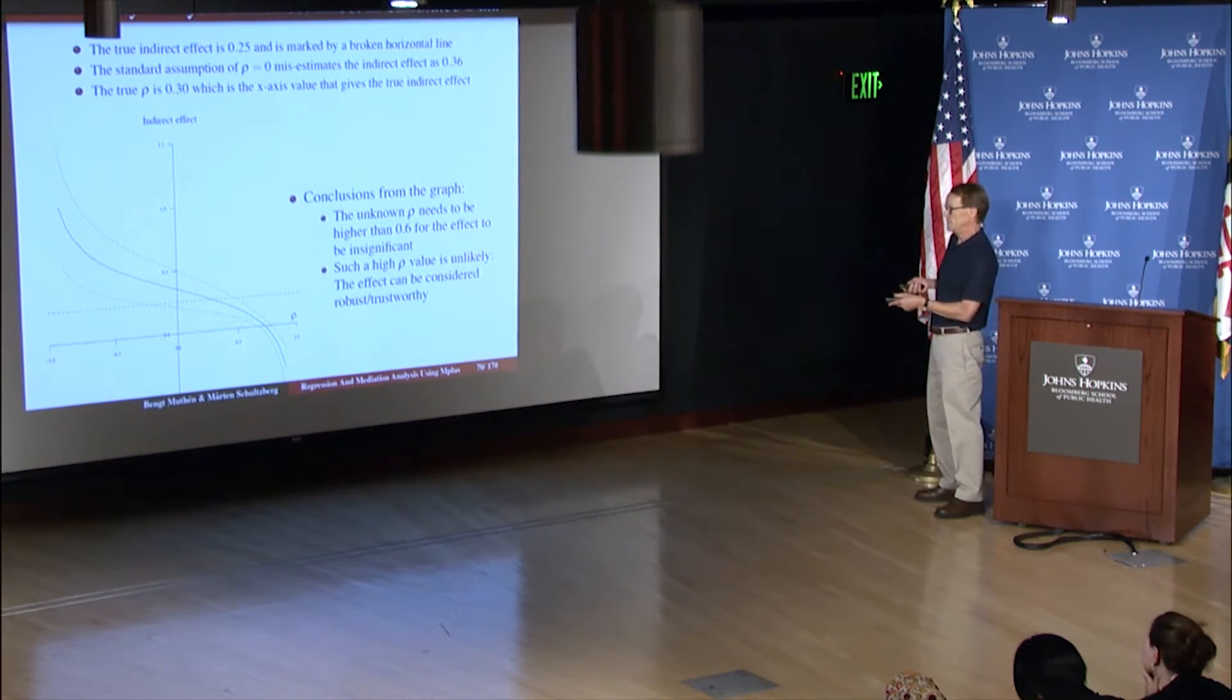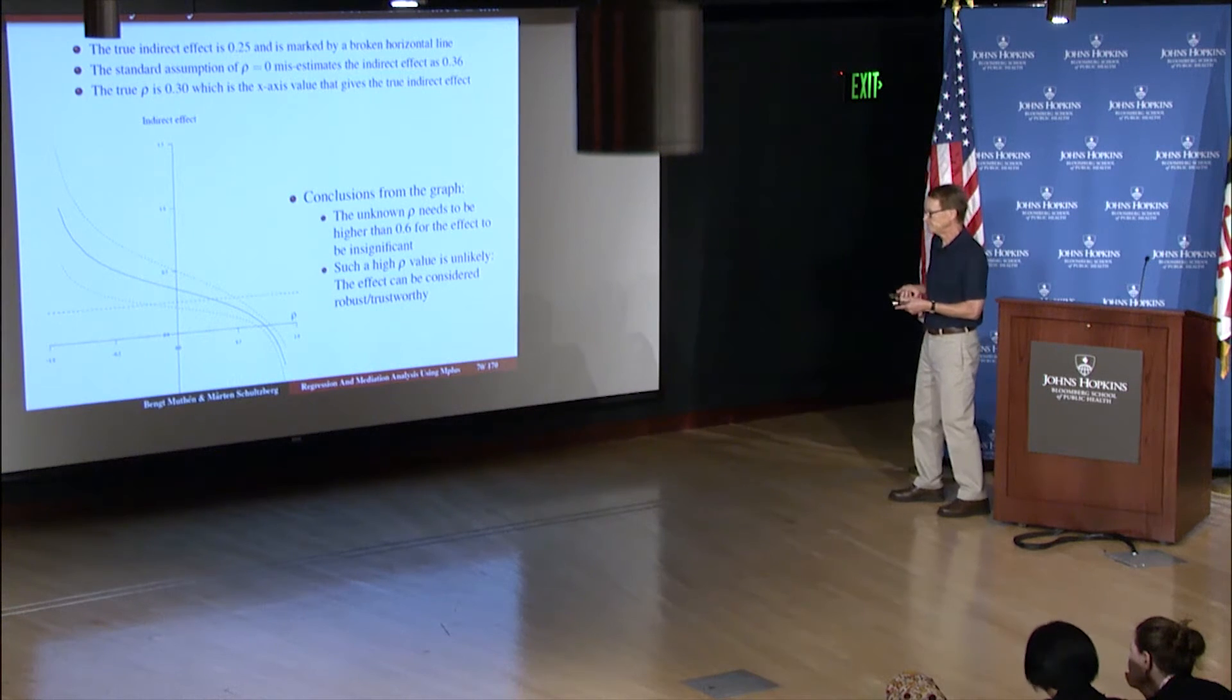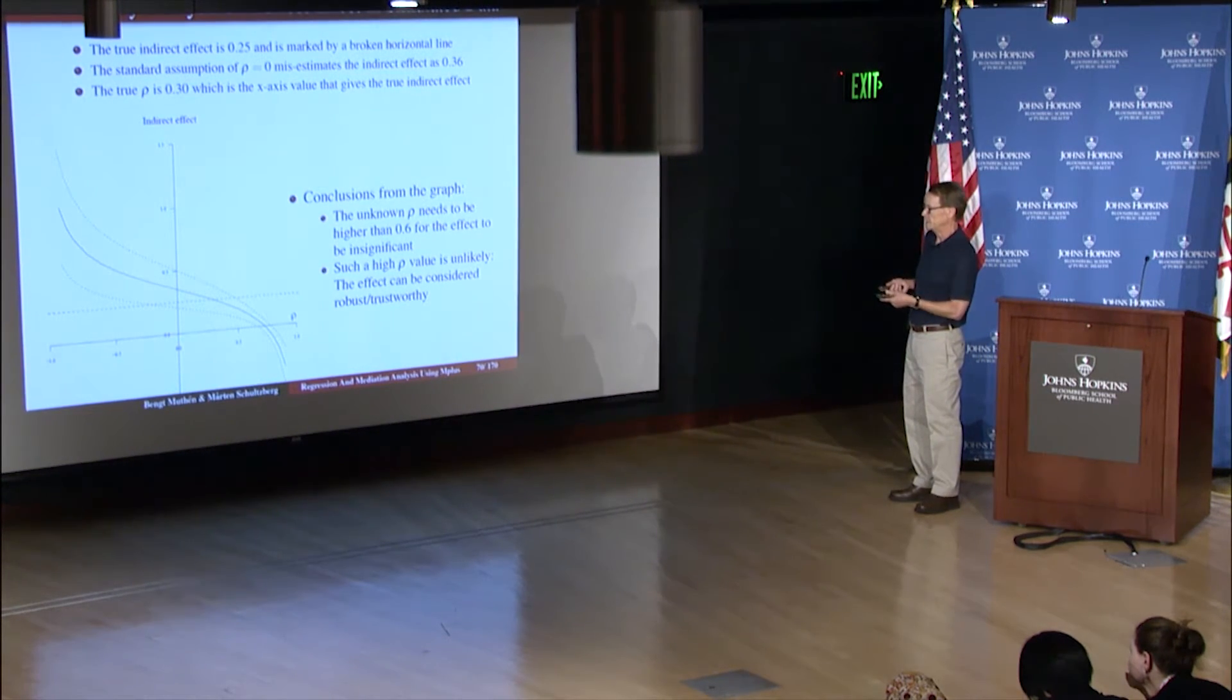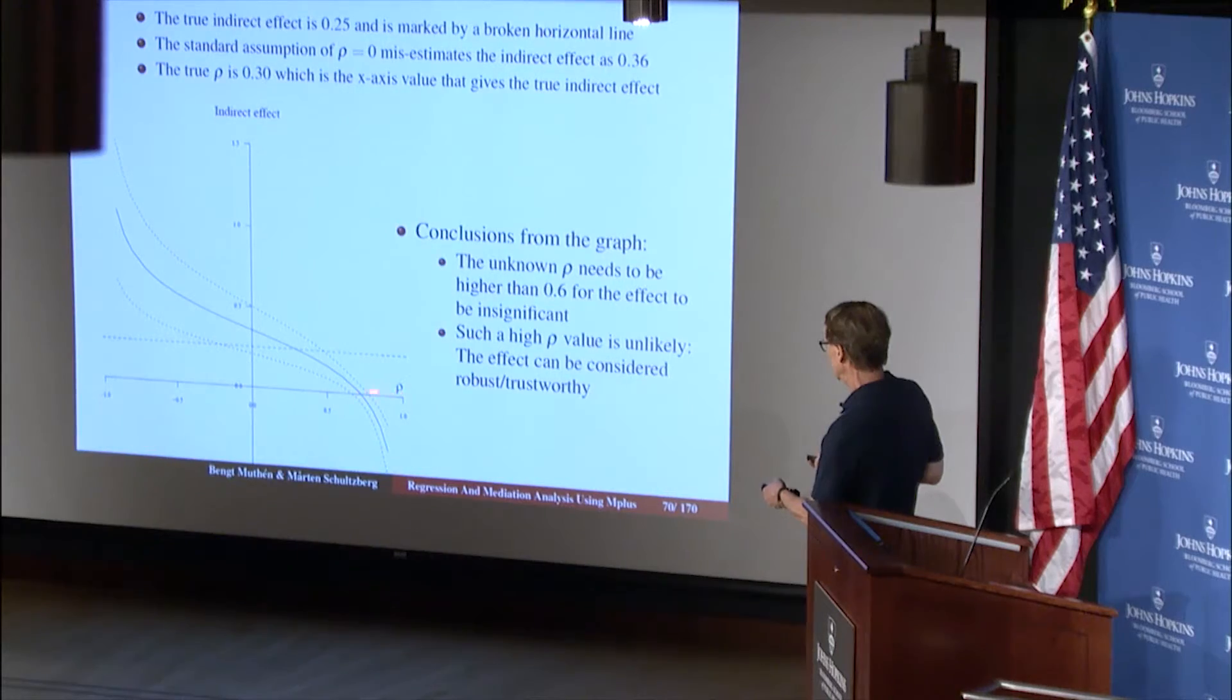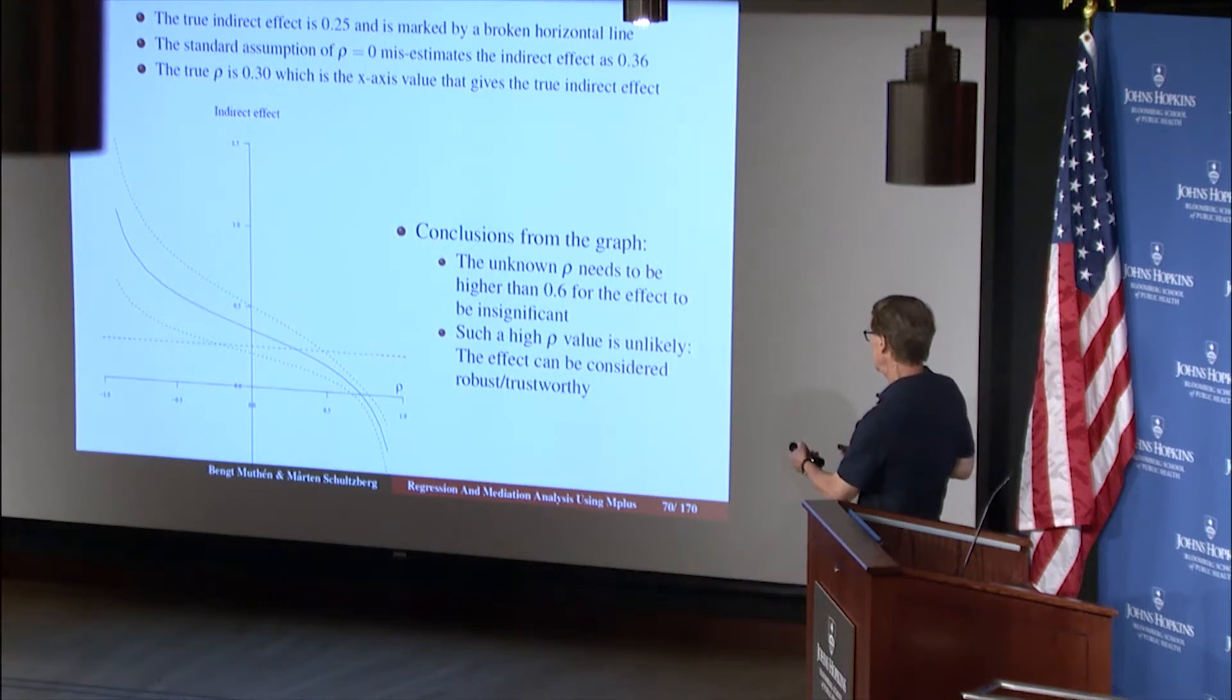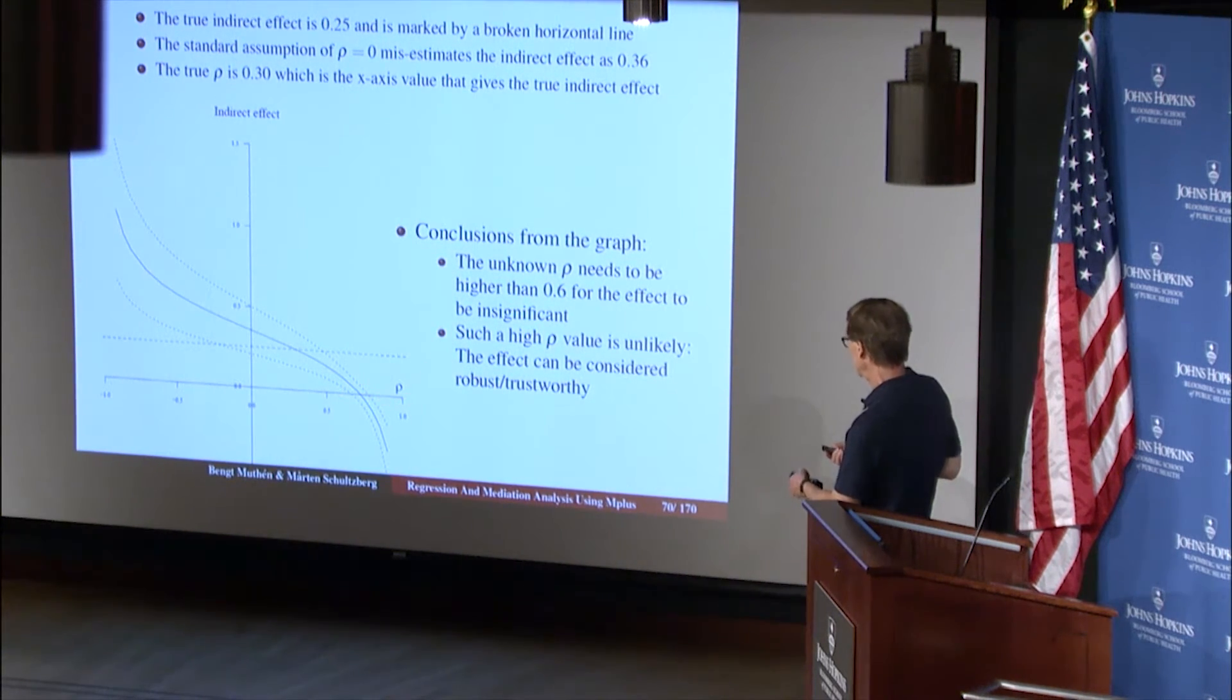So now you look at this graph. You have the indirect effect values here, and you have the confidence intervals. And what you would want is an indirect effect that is significantly different from 0. And you would get that over here. But then here is where the lower confidence band hits the indirect effect of 0. So out here, for these rho values, we cannot reject that the indirect effect is 0. For these high rho values, we can't reject that the indirect effect is 0. The unknown rho needs to be higher than 0.6 for the effect to be insignificant.